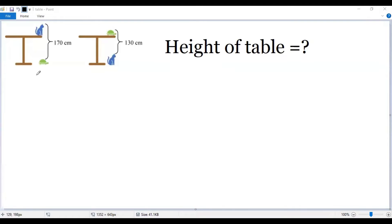To find the height of the table, let's change the first picture to an equation. Cat plus table minus turtle equals 170 centimeters.